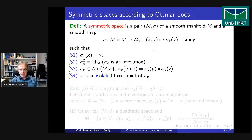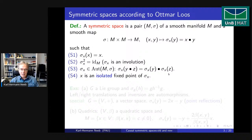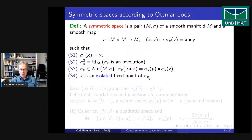The axioms require: first, sigma_X should fix the point X itself; second, it should be an involution; third, these maps sigma_X should be automorphisms of the symmetric space structure. The first three conditions are purely algebraic. For the fourth condition, you need at least some topology: X must be an isolated fixed point of sigma_X, and in terms of tangent maps this means the action of sigma_X on the tangent space is by minus the identity.